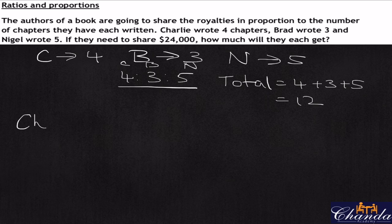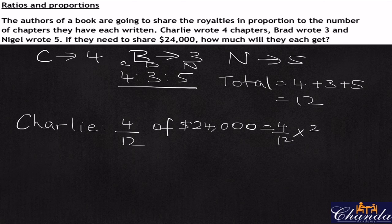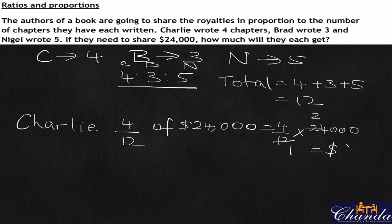If we were to do ratios now, Charlie wrote four out of the 12 chapters, so four-twelfths of $24,000 is how much he should get. So four over twelve times 24,000: twelve into twelve is once, twelve into twenty-four is twice, and four times two thousand gives us $8,000.